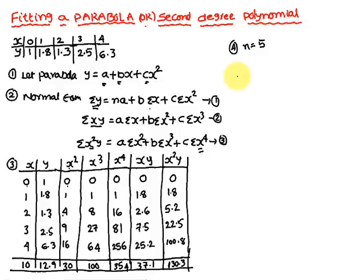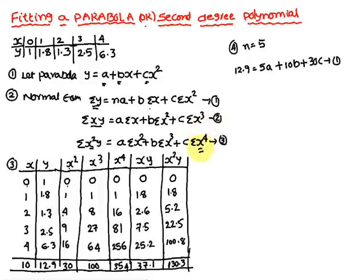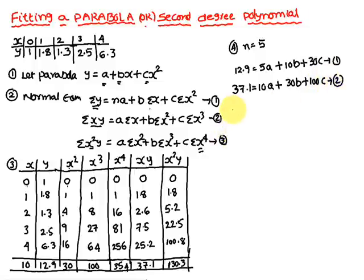Substituting into the first normal equation: Σy = na + bΣx + cΣx², giving 12.9 = 5a + 10b + 30c. The second normal equation: Σxy = aΣx + bΣx² + cΣx³, giving 37.1 = 10a + 30b + 100c.